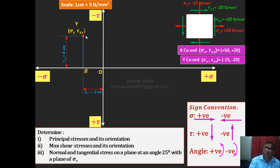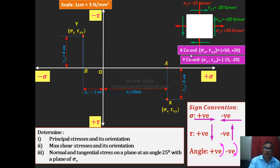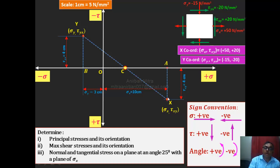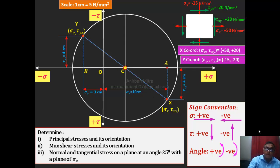From the Y point, draw a vertical line to mark point B — remember, B is always below Y. Now plot X: sigma X is positive 50, so 50 ÷ 5 = 10 cm on the right side. Tau XY is positive, so it is in the downward direction. That gives us the X point, and drawing a vertical line from X gives us point A. We have points A, B, X, and Y. Join X to Y, find the center C where line XY intersects the X axis, and draw the Mohr circle with radius CX.